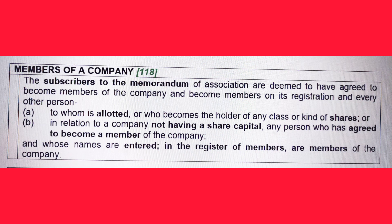As far as the subscribers are concerned, they are going to become both members as well as shareholders — the terms can be used interchangeably in this context. As stated in Section 118, and also under Section 18 of the Companies Act 2017, which lists the effects of registration, one of those effects is that the subscribers become holders of the initial shares, which means they become shareholders. So the subscribers to the Memorandum become members plus shareholders once the company gets incorporated.